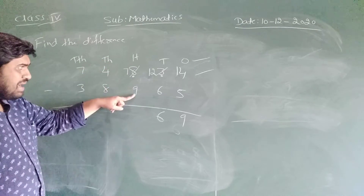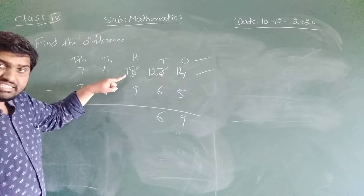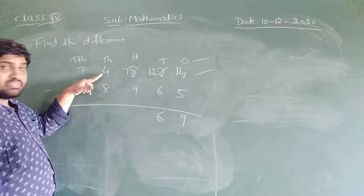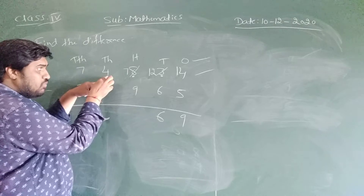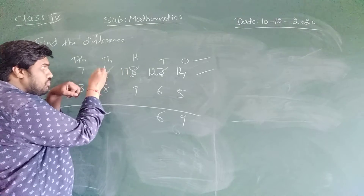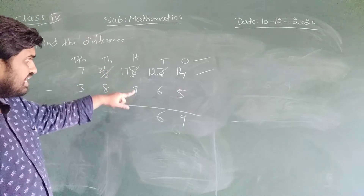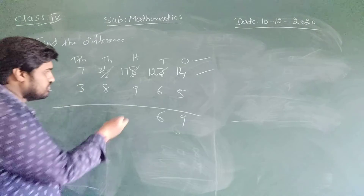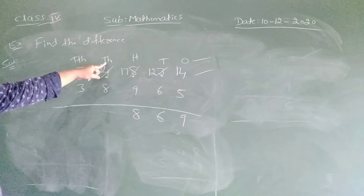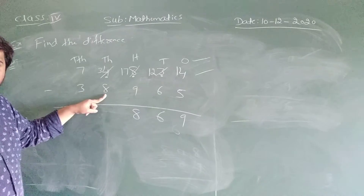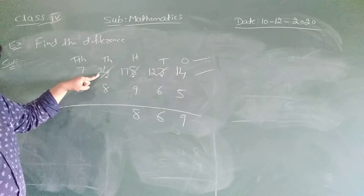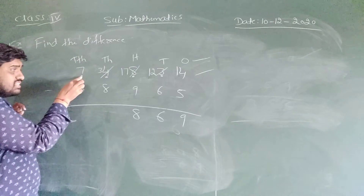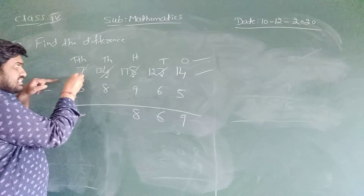Next, come to the hundreds. Now 7 minus 9 — is it possible to subtract? No, because 7 is the smaller number and 9 is the bigger number. Therefore again we have to take 1 borrow from the thousands. We take 1 borrow here: 7 becomes 17 and the thousands digit 4 becomes 3. Then 17 minus 9 equals 8. Next, thousands: 3 minus 8 — can we subtract? No, it is not possible. So again we take 1 borrow from the ten-thousands — 3 becomes 13 and 7 becomes 6.